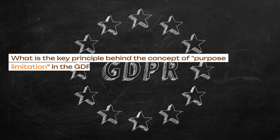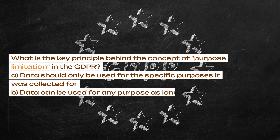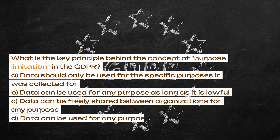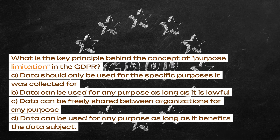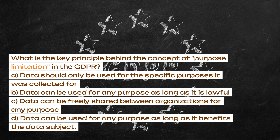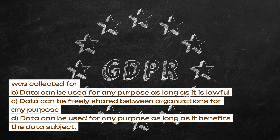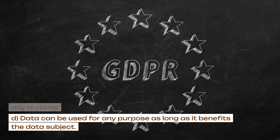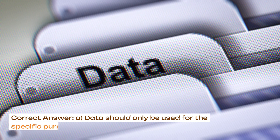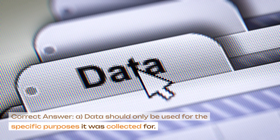What is the key principle behind the concept of purpose limitation in the GDPR? A. Data should only be used for the specific purposes it was collected for. B. Data can be used for any purpose as long as it is lawful. C. Data can be freely shared between organizations for any purpose. D. Data can be used for any purpose as long as it benefits the data subject. Correct answer: A. Data should only be used for the specific purposes it was collected for.